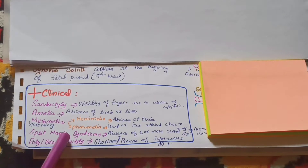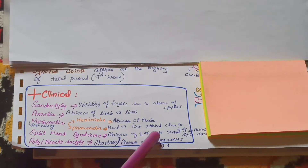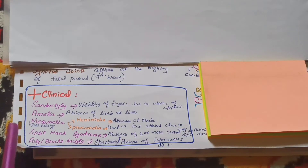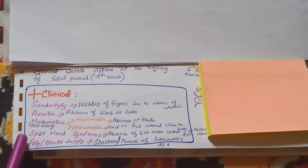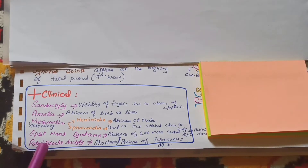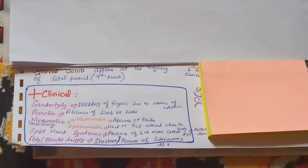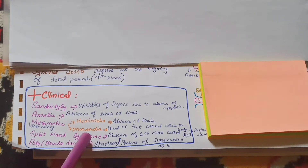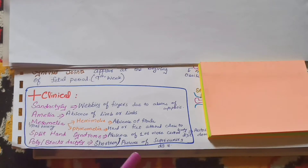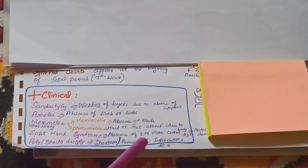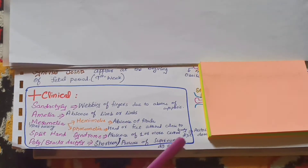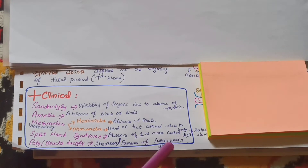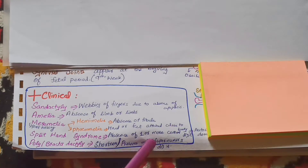Split hand syndrome is the absence of one or more central digits. The two most common abnormalities are polydactyly and brachydactyly. Brachydactyly is characterized by shortness of the digits. Polydactyly means the presence of extra digits, also called supernumerary digits.